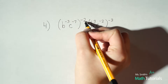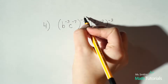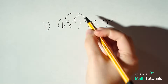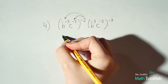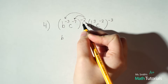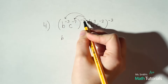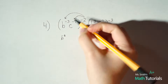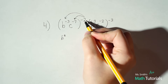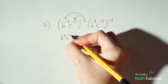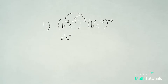Everything within these parentheses is brought to the power of negative 2. That's okay — we still distribute it throughout the whole problem. So b to the negative 3rd brought to the power of negative 2: power to a power, we multiply. Negative 3 times negative 2 is actually positive 6 — that works in our favor. c to the negative 7th brought to the power of negative 2: negative times a negative is a positive, so 7 times 2 is 14.